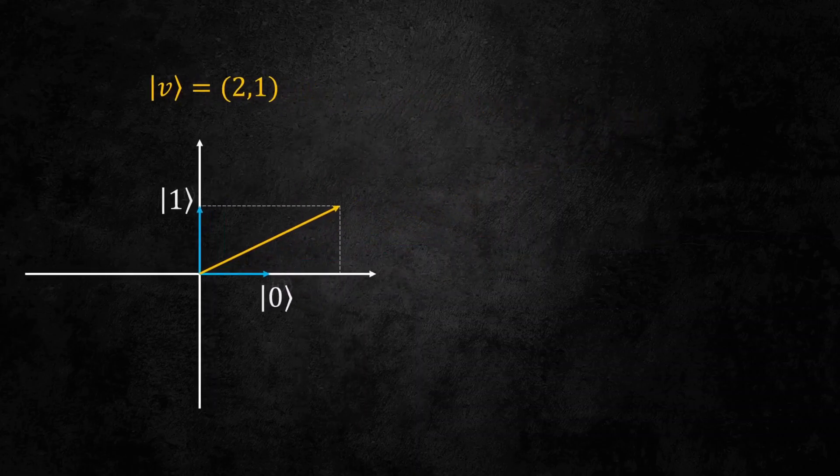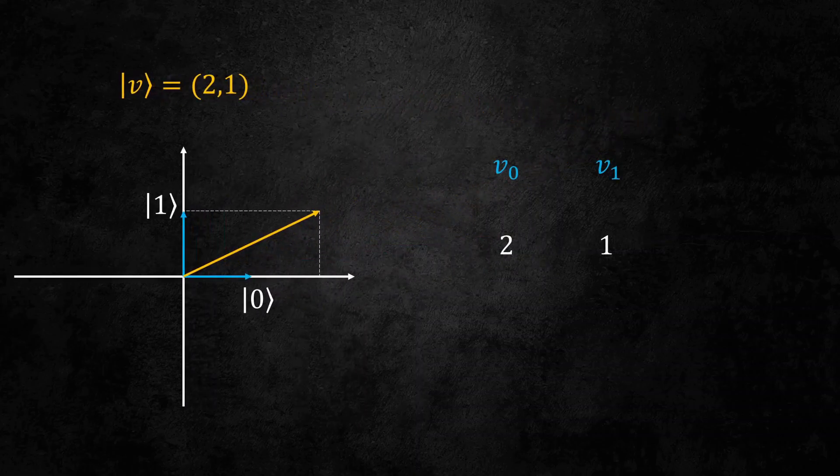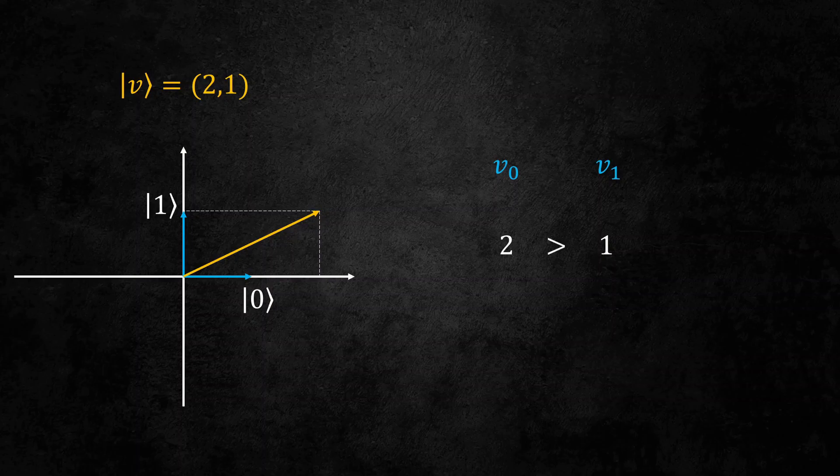In this example, the x-component is 2 and the y-component is 1. And since 2 is bigger than 1, when we measure this state, it should be more likely to get the result of 0. Let us look at some maths now.